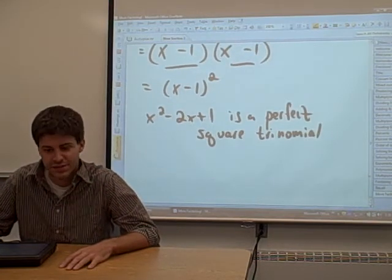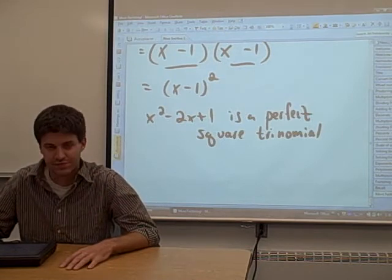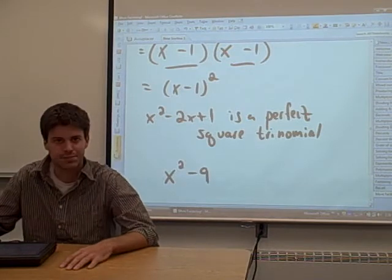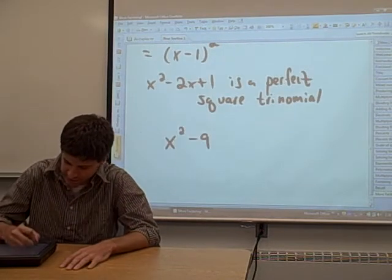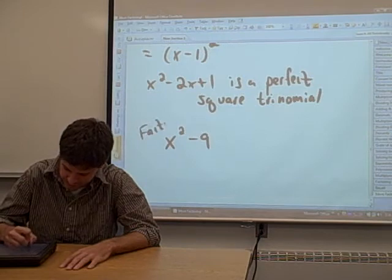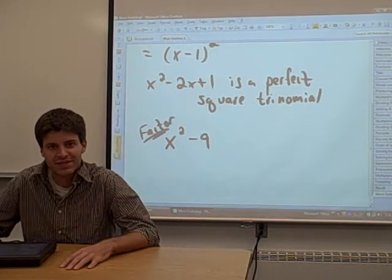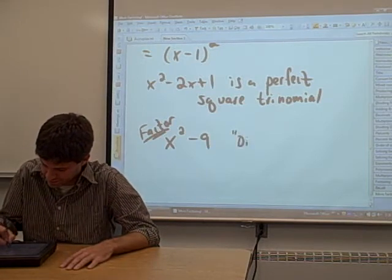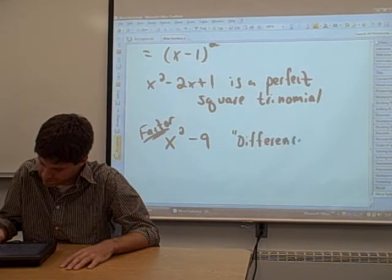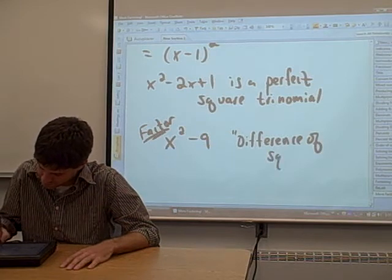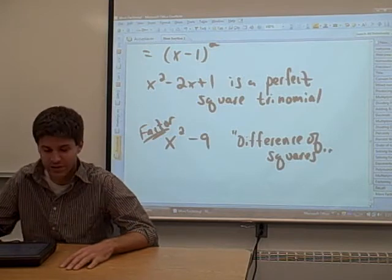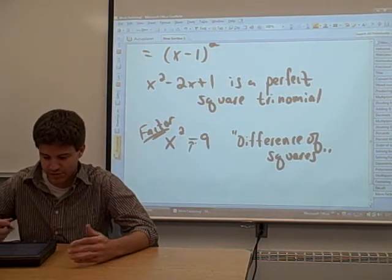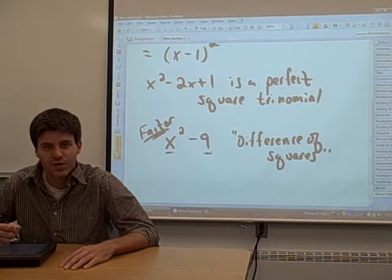There's another case of a special factorization. Say we have something like x squared minus nine. And we'd like to factor this. This has a name too. It's called the difference of squares.